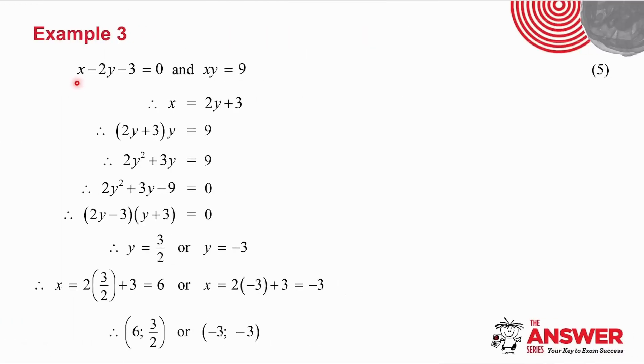I take the linear equation. I always want to avoid fractions if I can, so I make x the subject of the formula. And x is equal to 2y plus 3. Now, that x is the same as this x. So, in place of x, I'm going to put 2y plus 3.